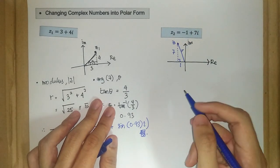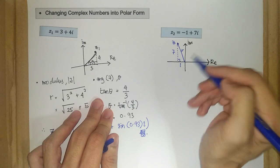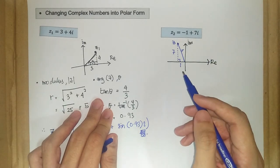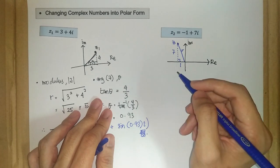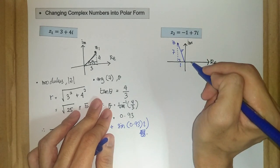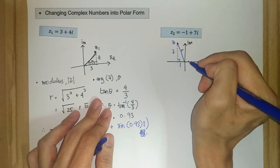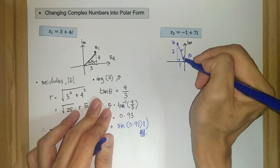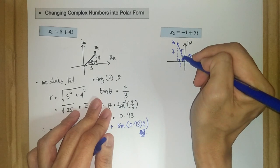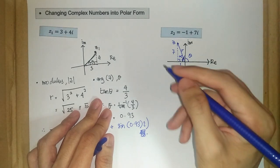And what about the argument theta? Is it here or here? So again, back to its definition, argument z or theta is measured from the positive real axis. So this is theta. So this angle here, let's say I will name it alpha.